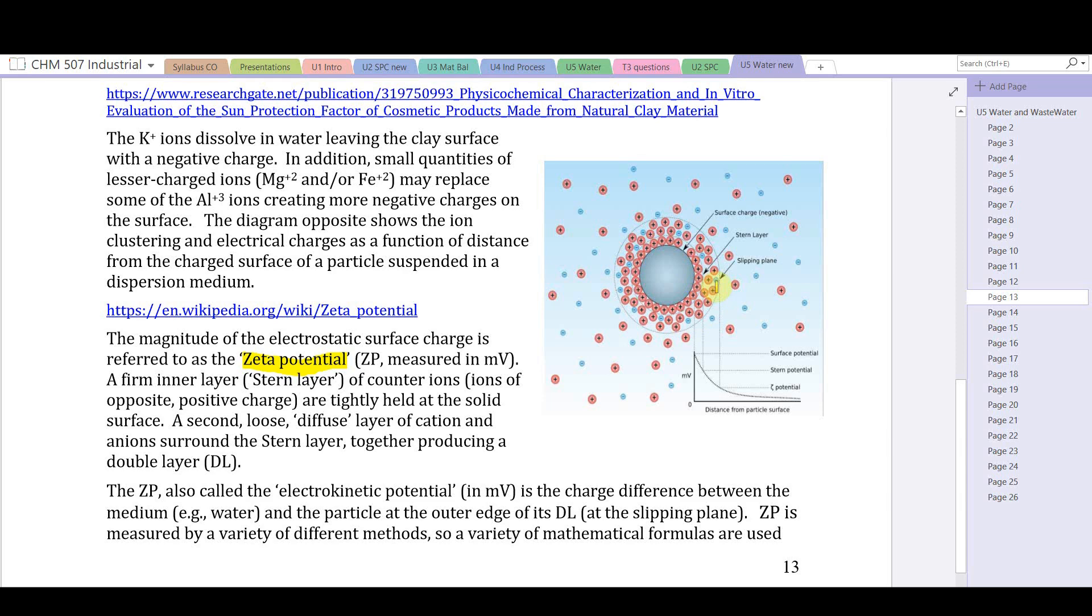Zeta potential is the electrokinetic potential in millivolts. Notice how the charge at the surface of the sphere is highest and then decreases as we move further away. The zeta potential, also called the electrokinetic potential measured in millivolts, is the charge difference between the medium (in this case water) and the particle at the outer edge of the double layer - that's called the slipping plane.